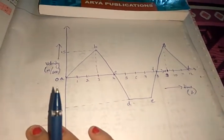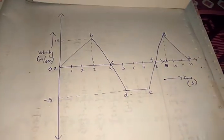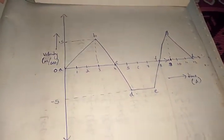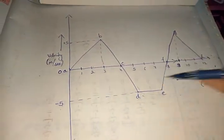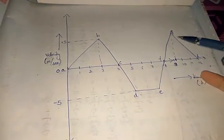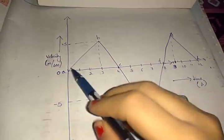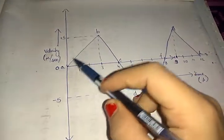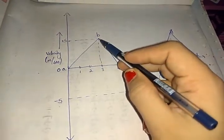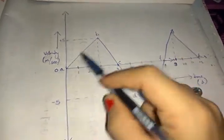How will we find the displacement? The same way we found distance earlier — we find the area of the graph. In this case we find the area between the time axis and the velocity graph. Here you can see inclined lines forming geometric shapes.